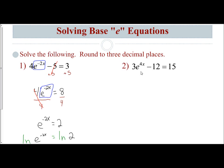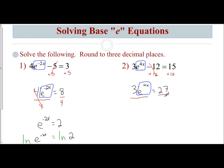Let's look at another example: 3 times e to the 4x minus 12 equals 15. We need to isolate the base e first by getting rid of any addition or subtraction, then any coefficients. So I'm going to add 12 to both sides, which cancels out the minus 12, leaving me with 3 times e to the 4x power equals 27. I still need to isolate the base e, so I divide both sides by 3. Since 27 divided by 3 is 9, I'm left with e to the 4x power equals 9.